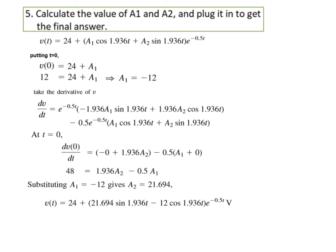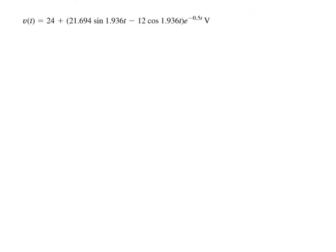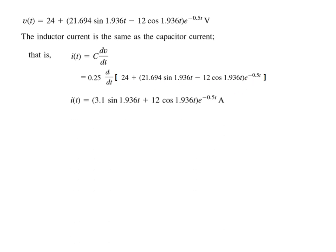And here also we have to find the current. So we know V. I is C dV/dt. Plugging in the value of V here and taking differentiation. And final answer we can get like this. I hope you can differentiate this. And this is the final result. So this should give you an understanding of solving this type of problems. Thank you.